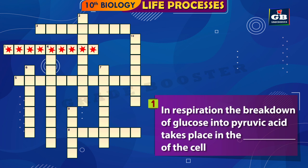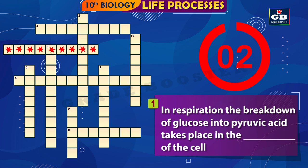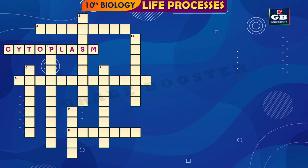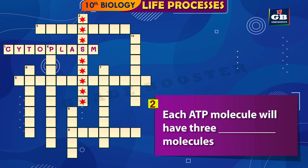1 Across: In respiration, the breakdown of glucose into pyruvic acid takes place in the dash of this cell. The answer is cytoplasm. In respiration, the breakdown of glucose into pyruvic acid takes place in the cytoplasm of the cell.